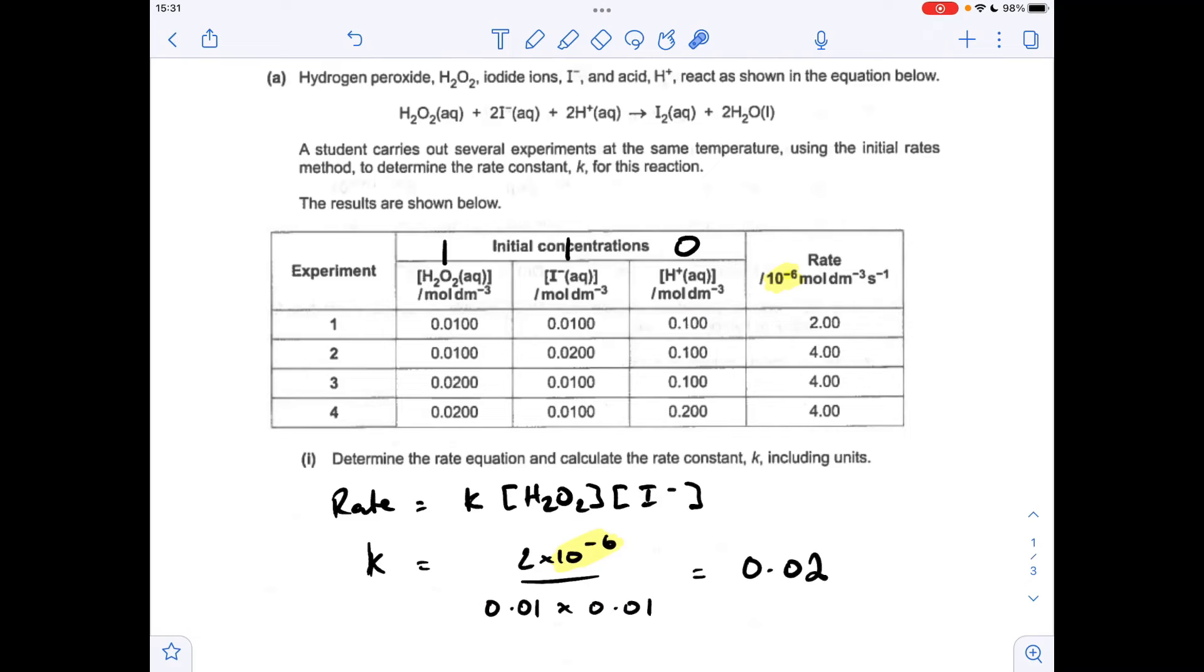Just be careful with the rate value, because you'll notice I've highlighted there all of these rates are multiplied by 10 to the minus 6. I imagine that might be a common mistake. So 2 times 10 to the minus 6 is the rate for experiment 1, and they're the two concentrations.